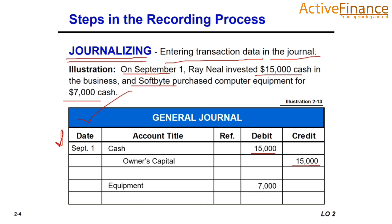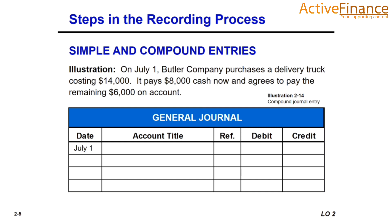The second entry on September 1st involves purchasing $7,000 of computer equipment. We record the account title as Equipment (or Computer Equipment). Since assets increase, we record $7,000 on the debit side. Cash decreases because we paid cash for the equipment, so we record Cash on the credit side. When cash decreases, it is recorded on the credit side.